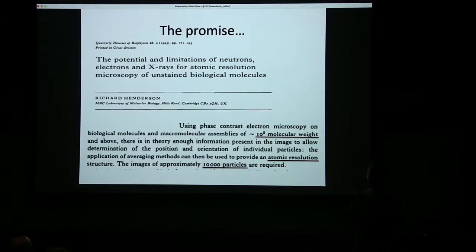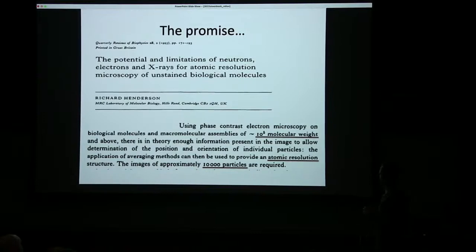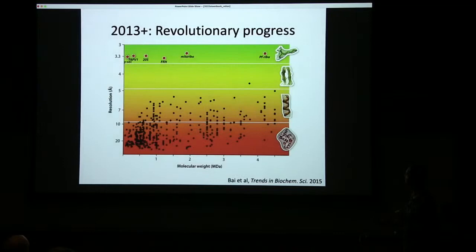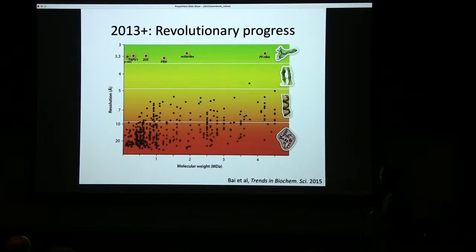I joined the cryo-EM field in 2003 and worked for quite a while in Madrid. During all those years people thought Richard was quite the optimist. The type of resolutions people would get on complexes even way bigger than 100 kilodaltons — looking at megadalton-sized ribosomes — was around 20 angstroms in 2003, slowly improving to eight or nine angstroms by the time I left. Nowhere near de novo atomic modeling for a 100 kDa protein from ten thousand particles. That all changed quite suddenly in 2012–2013 with what Werner Kühlbrandt termed the resolution revolution in cryo-electron microscopy.